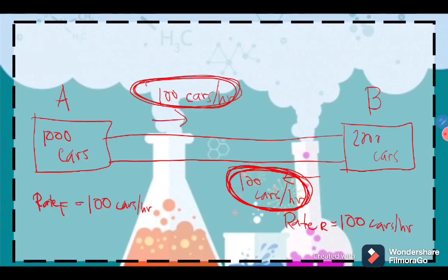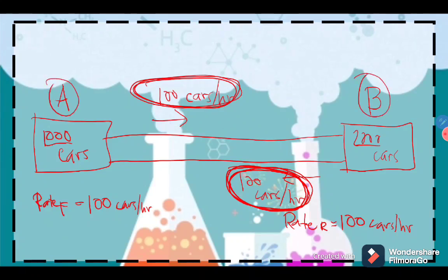It does not necessarily mean that both sides must be equal in number of cars to attain equilibrium. We should take into consideration the rate — not just the count — on both sides. If the rate of the forward reaction equals the rate of the reverse reaction, then this type of reaction is reversible.